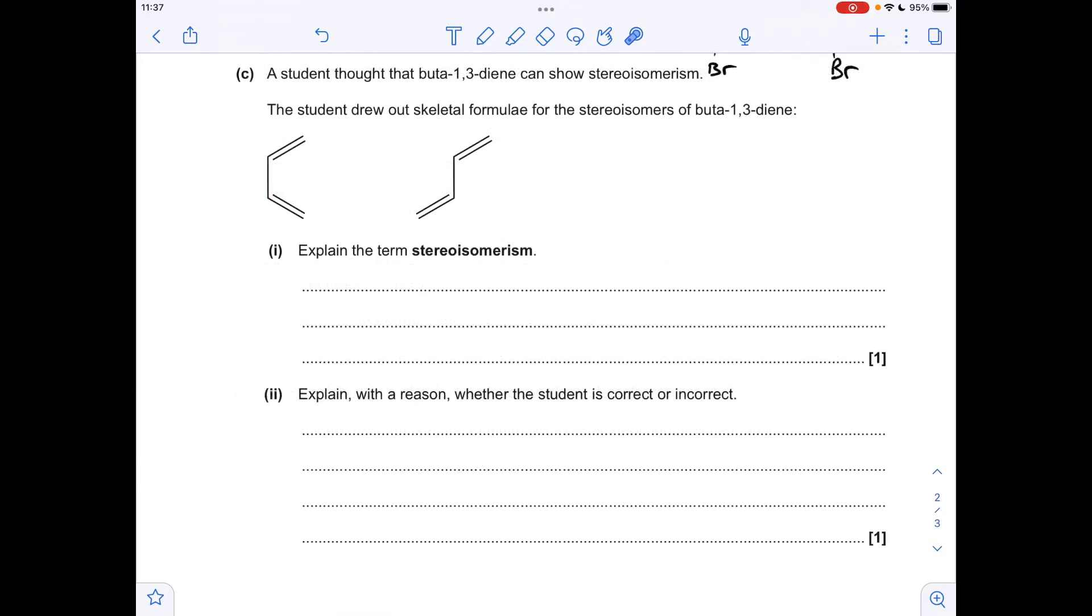Moving on to part C, we've just got to give the definition for stereoisomerism. That's when you've got molecules with the same structural formula but with different spatial arrangements of atoms or groups. The next part: is the student correct or incorrect with these two being stereoisomers? The student's incorrect because this sigma bond in the middle can rotate. So basically, if that's spun round, you'd get that.